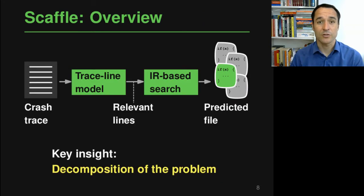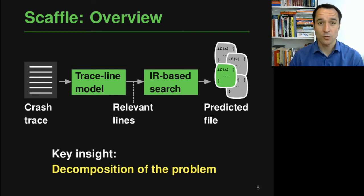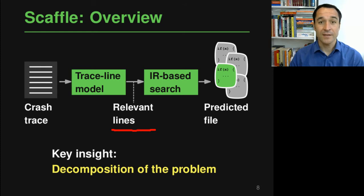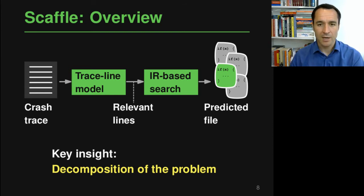Let me now introduce Scaffle, our approach for localizing bugs. Given a crash trace, the goal of Scaffle is to predict which file out of the many files in the code base to change in order to prevent this crash in the future. The key insight of Scaffle is to decompose this problem into two easier subproblems. The first takes the crash trace and tries to identify the relevant lines in it, and the second takes these most relevant lines and matches them against the files in the code base. We address the first subproblem using our so-called trace line model, and the second using an information retrieval based search.